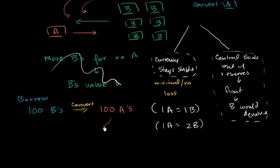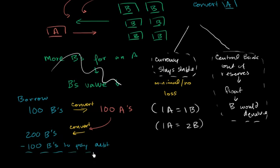If 1A all of a sudden is 2B's because the central bank can't intervene anymore, or they are floating, the B gets devalued, then what's going to happen? These guys can take their 100 A's, convert it back once things are floating. So now they're going to convert back into this direction. And how many B's can they convert it into? Well, now they can convert it into 200 B's. They can pay off their debt because they borrowed the 100 B's. So minus 100 B's to pay debt. And then they make a pretty sizable profit. They make a profit of 100 B's.